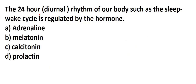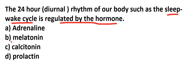Next question: the 24-hour diurnal rhythm of our body, such as the sleep-wake cycle, is regulated by which hormone? This is a direct question. The hormone that regulates our sleep-wake cycle is melatonin. The correct answer is option B — melatonin.